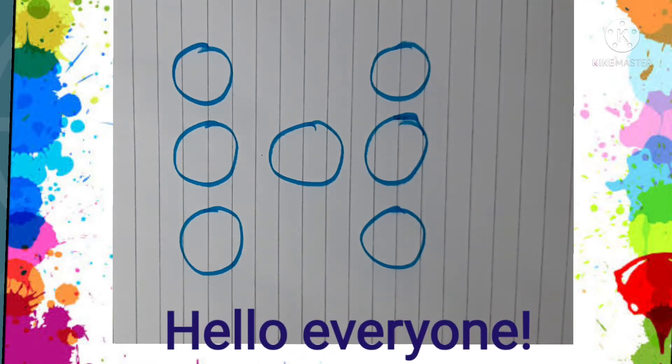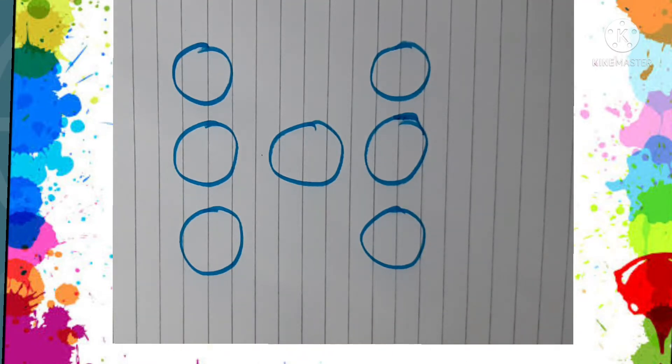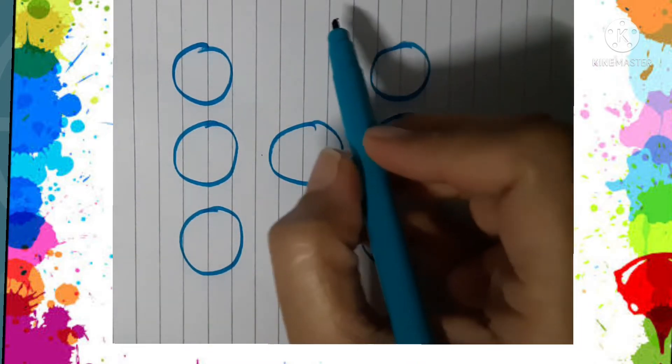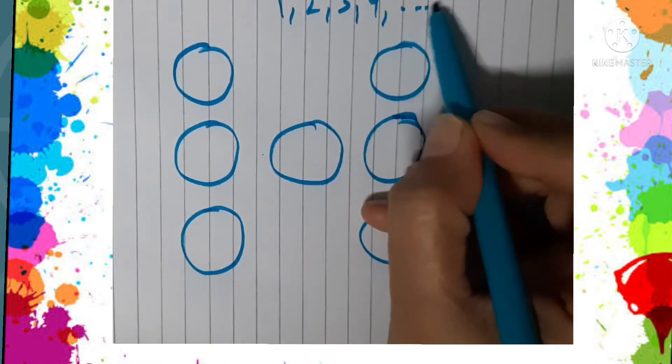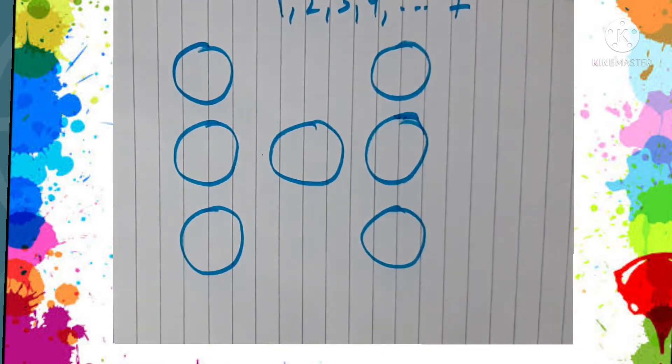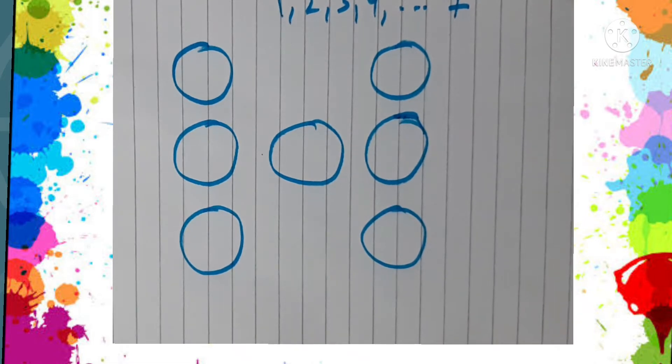Hello everyone, are you ready to solve today's puzzle? It's an interesting number puzzle in which we are given the digits one, two, three, four, up to seven. What is supposed to be done? We have to fill these seven digits in the circles.